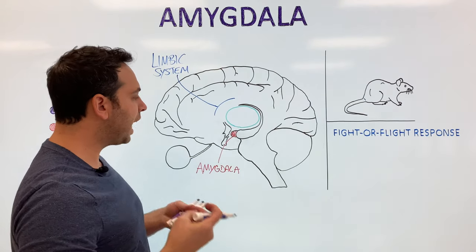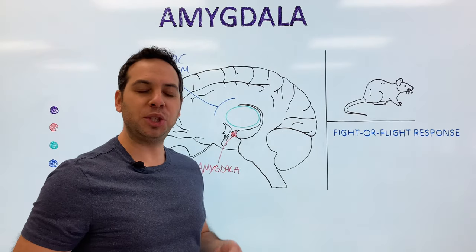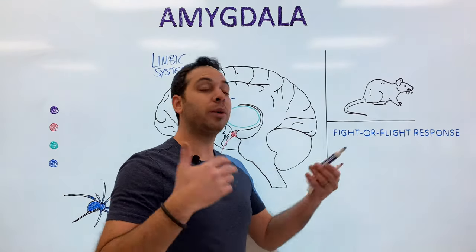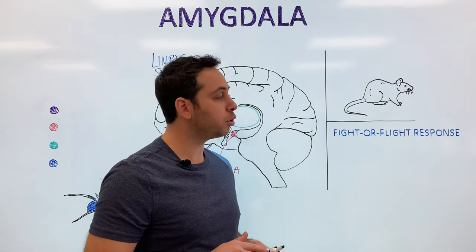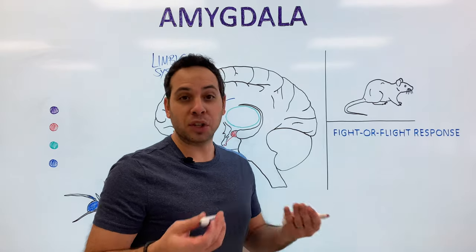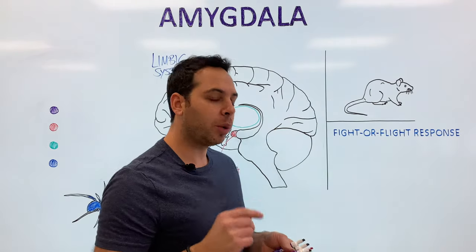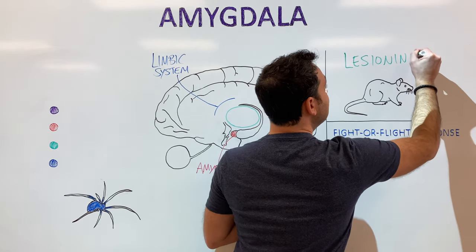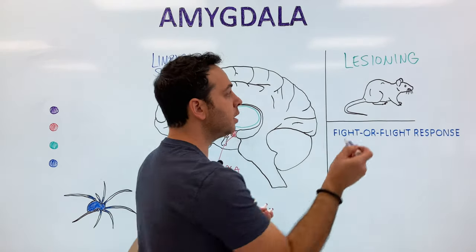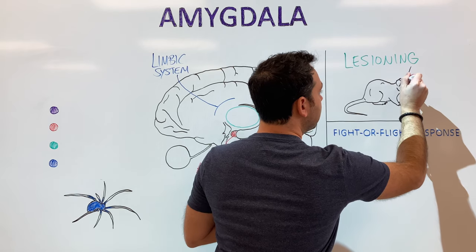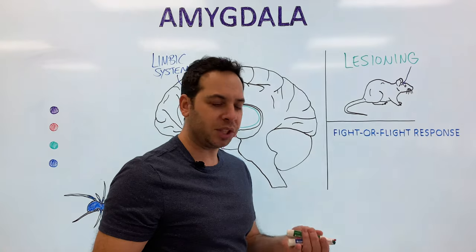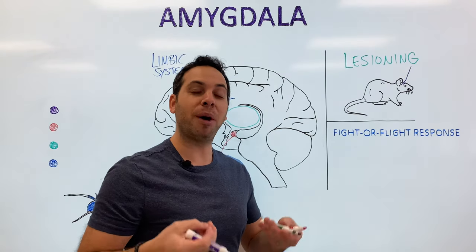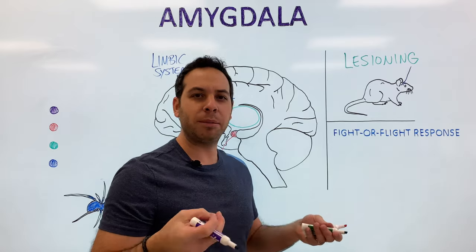How do we actually know what the amygdala does? A lot of it comes down to animal research. According to the IRB — the Institutional Review Board — it's more ethical to do it on animals than humans. There's a procedure called lesioning, or deep lesioning, where you insert a thin wire into the brain of an animal — typically lab rats or rhesus monkeys — and you damage or remove a part of the brain. Whatever part is damaged is called a lesion.